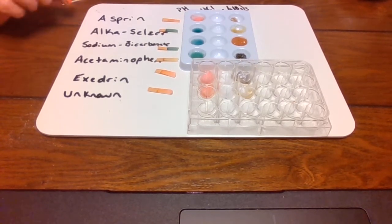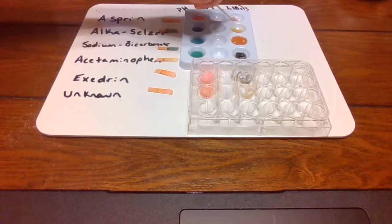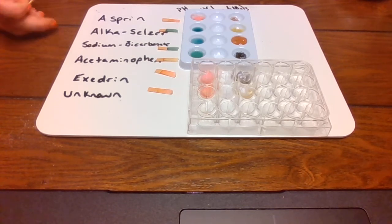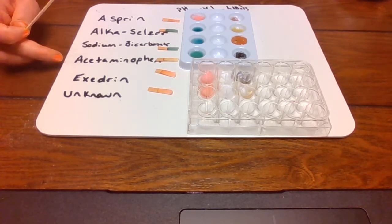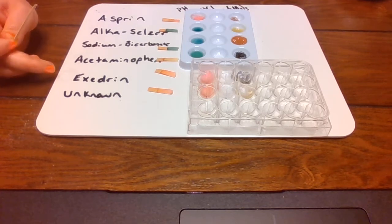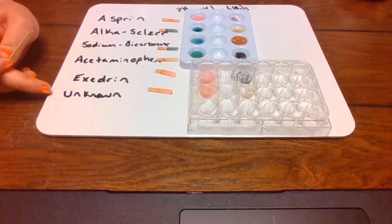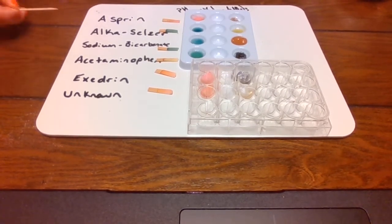Okay. So what we're looking at is for aspirin, it's kind of looking like it didn't fully dissolve, and it's kind of like a muddy, orangey, yellowy color. For Alka-Seltzer, it's more of like a neon green, yellow color. For the sodium bicarbonate, it's like a gross looking thick putty that's orange. And then acetaminophen is black. And then for Excedrin, it's also looking kind of blackish. And then for the unknown, it's looking more of that yellowy, orangey kind of color.